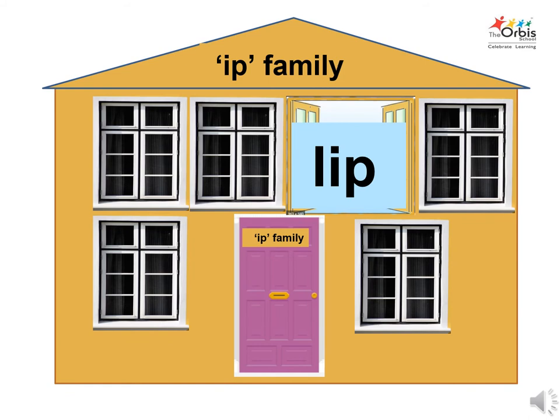Let's find the name of the third family member living in the house. The phonic sound of l is l. To combine the sound of l with the sound of ip to get the name of the person inside the window — that is lip. Say hello to lip.